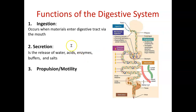Our digestive system does secretion. There are all sorts of things secreted: hormones, acids, enzymes, and buffers. When we talk about secretion, a lot of times these things are just called juices — like gastric juice or intestinal juice.